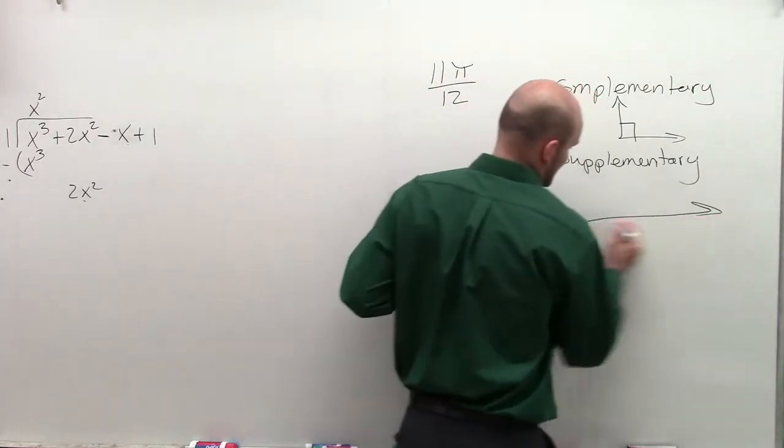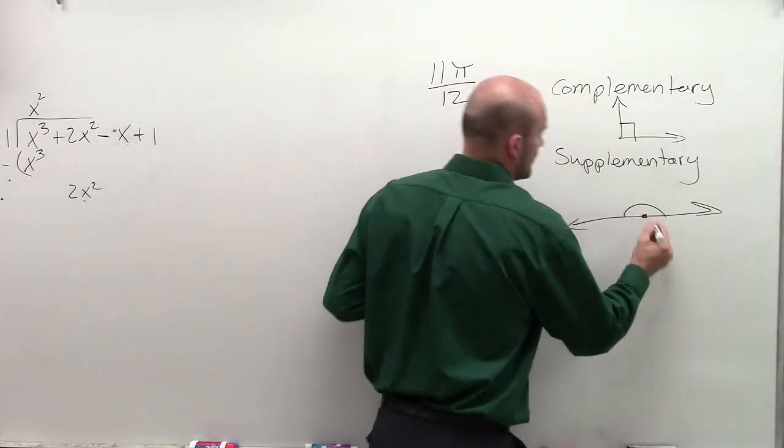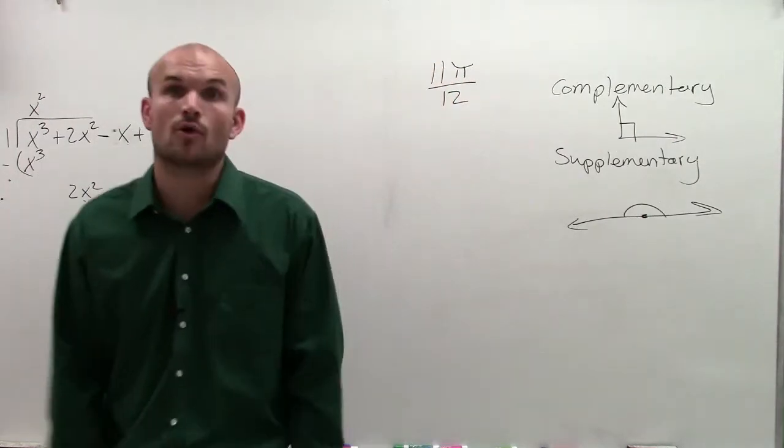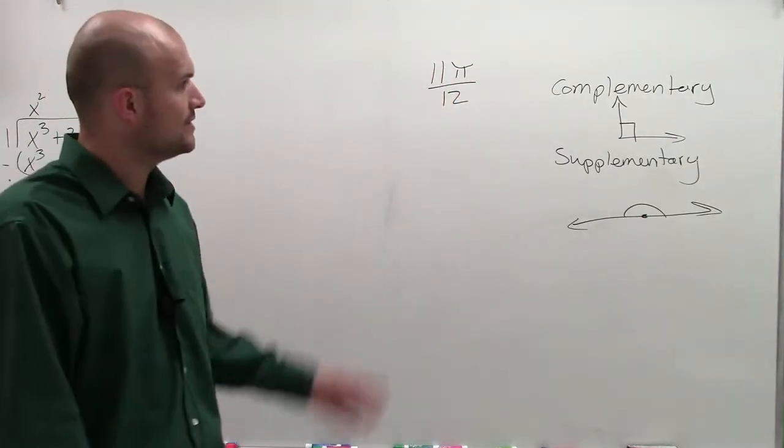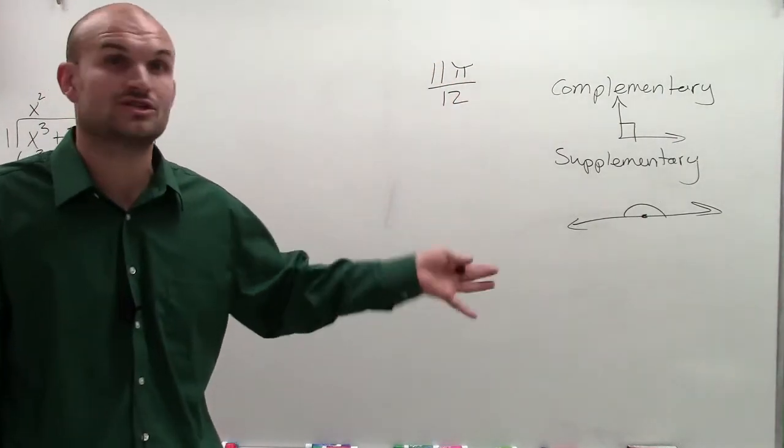Supplementary were two angles that when added up or combined gave us a straight angle or an angle of 180 degrees. And we used those very importantly in geometry.